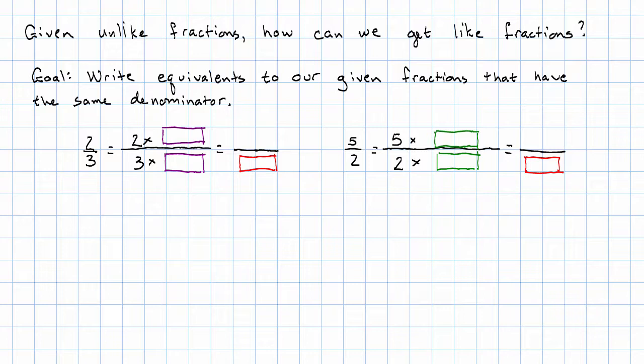And there are several ways that we can do this. The first way, the easiest way, is to just multiply the denominators together. So my denominators are 3 and 2, 3 times 2 is 6, I'm going to put 6 in the red box.